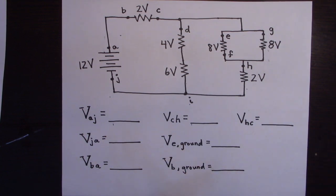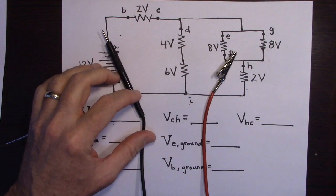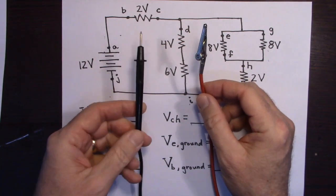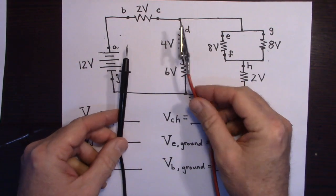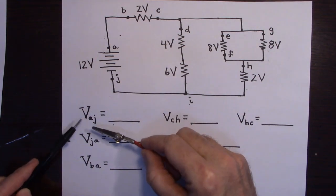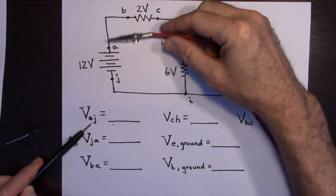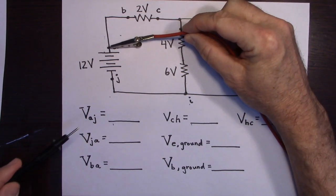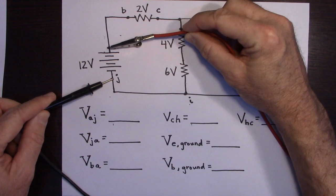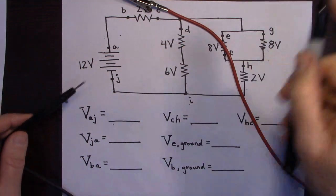I'm going to take my voltmeter with a red and a black end. The voltmeter always tells you what the voltage is at the red end with respect to the black end — the black is the reference. So if I'm measuring the voltage at A with respect to J, I put my red end at A and my black end at J. The voltmeter reads that A is 12 steps higher in the mall than J — 12 volts.